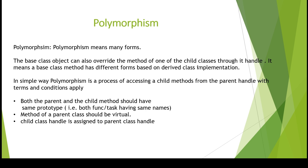Polymorphism means the same code behaves differently with respect to the object it is dealing with. You do not need to change every handle inside the testbench — you just assign the object to the base class and it will get the properties of that object directly. To do this, you have to follow some rules: both the parent and child method should have the same prototype, meaning the same name. Also, the method declared inside the base class should be virtual, and the child class handle must be assigned to the parent class handle.